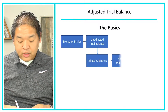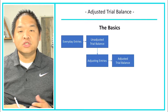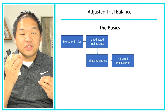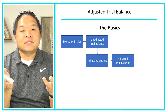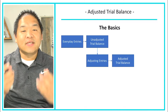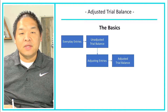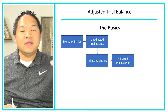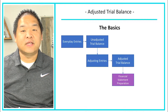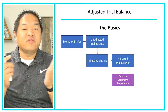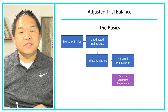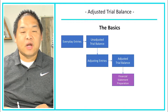After we've done the adjusting entries, we prepare the adjusted trial balance. All we do is update the unadjusted trial balance with the adjusting journal entries, combine those — which changes the account balances — and then prepare the adjusted trial balance. That adjusted trial balance includes all accounts and all amounts including the adjustments. From there we prepare the financial statements, and that's how critical the adjusting entries are.